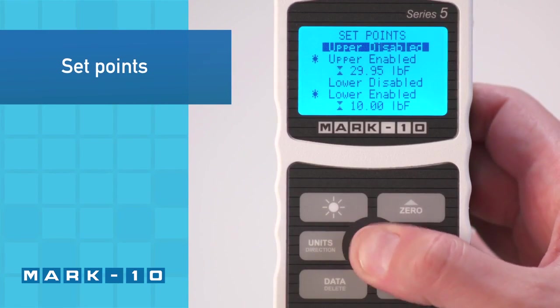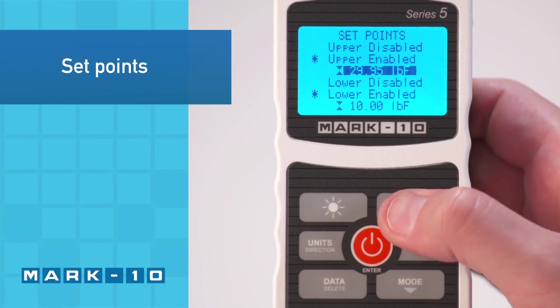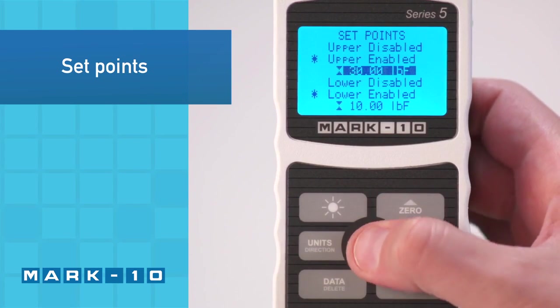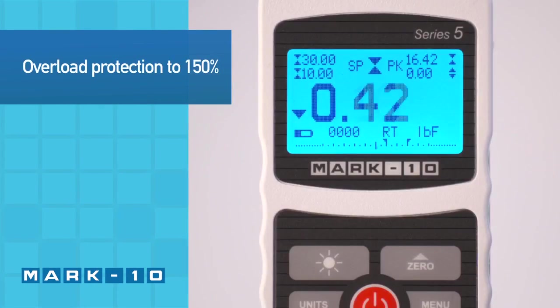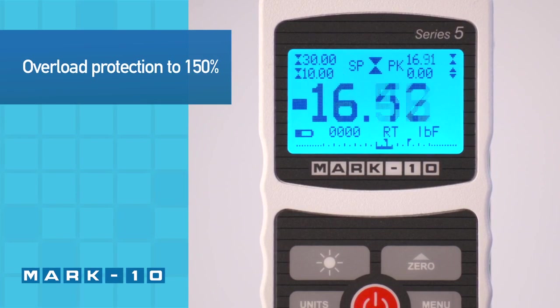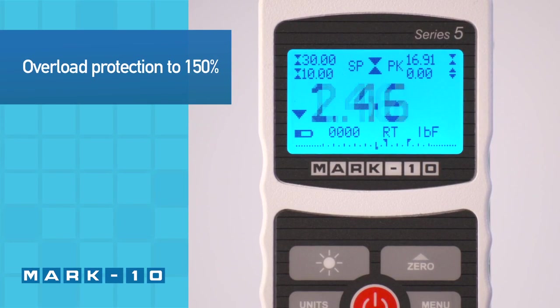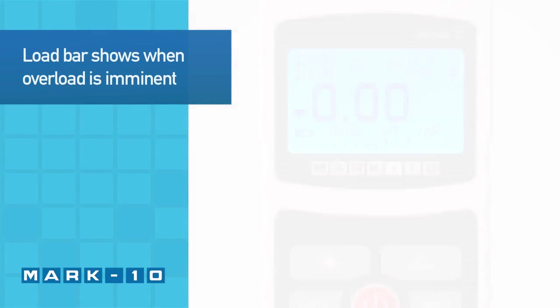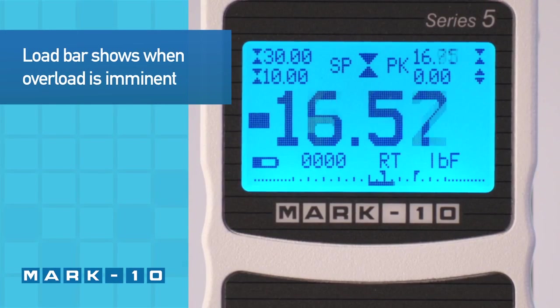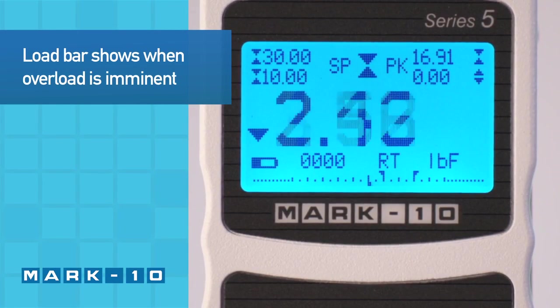Upper and lower set points, shown in the upper left corner, may be configured for pass-fail testing. The Force Gauge is overload protected to 150% of its capacity. For visual convenience, the load bar at the bottom of the display shows when an overload is imminent.